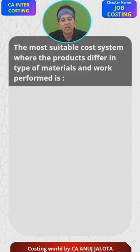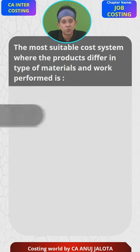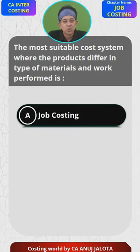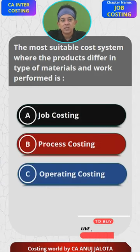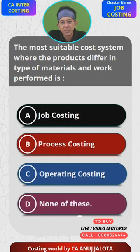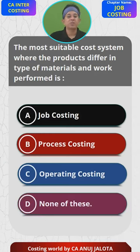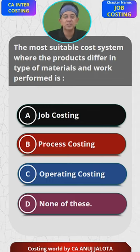The first question: the most suitable cost system where products differ in type of material and work performed is — bring out the four options. This is an easy question. Option A: job costing, B: process costing, C: operating costing, D: none of the above.